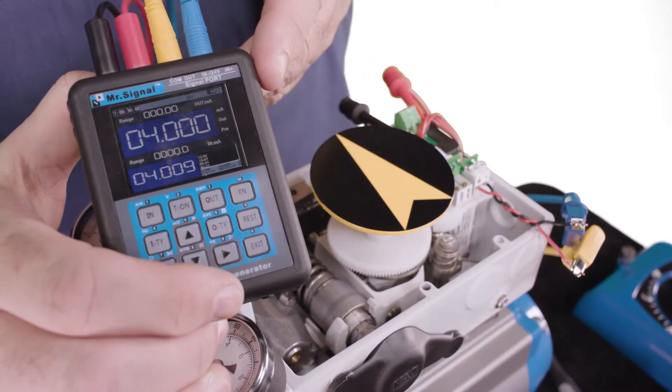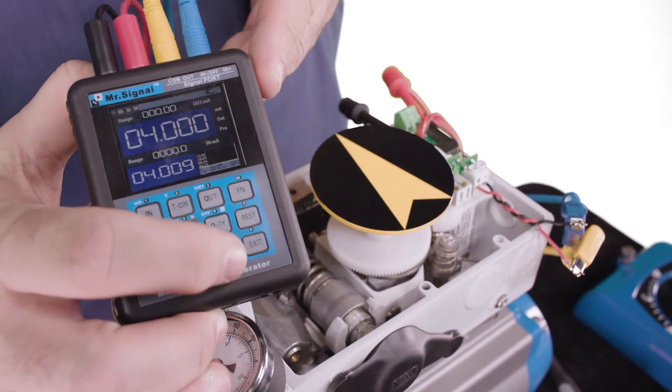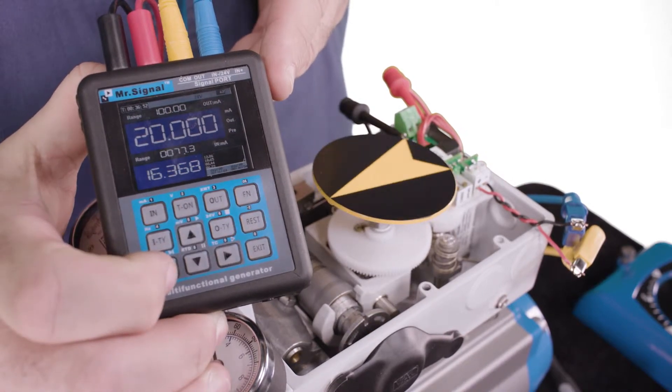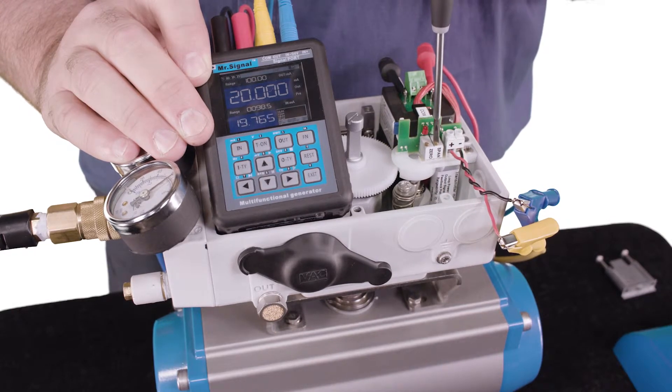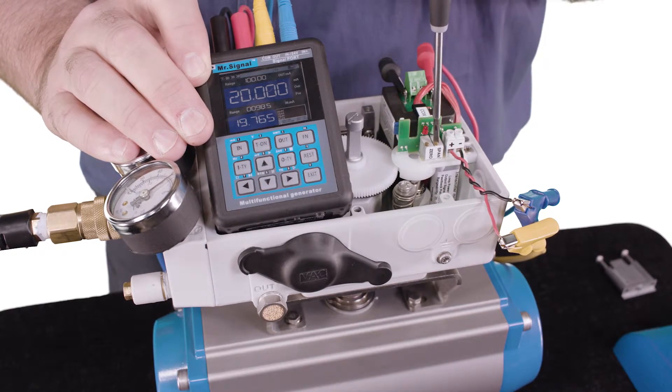Now we can apply 20 milliamps to the positioner and open the valve. Use the span trim potentiometer to adjust the output to read 20 milliamps.